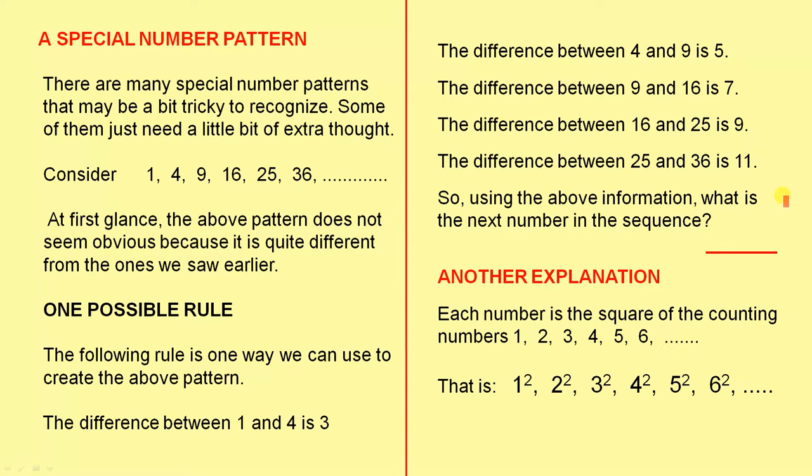So, using the above information, what is the next number in the sequence? In other words, the differences here are 3, 5, 7, 9, 11. So what would be the next difference? We're going up by 2 each time. So the next difference will be 13. So what's 36 plus 13? I think you've worked that out. It's 49.